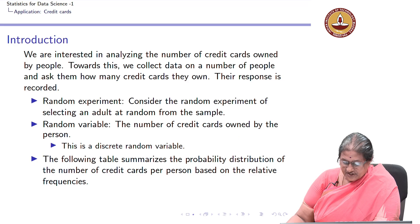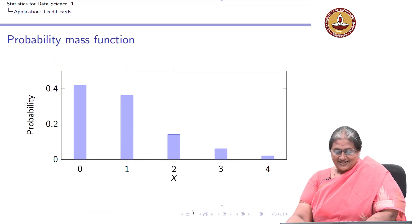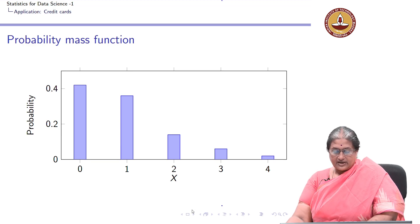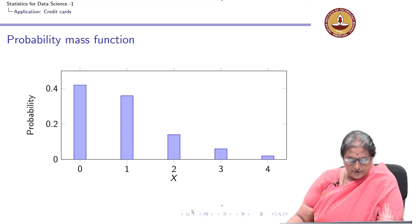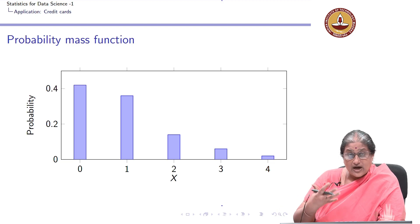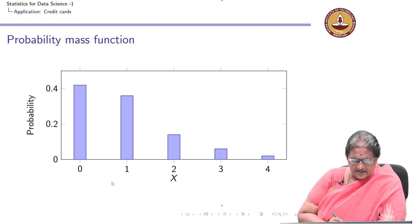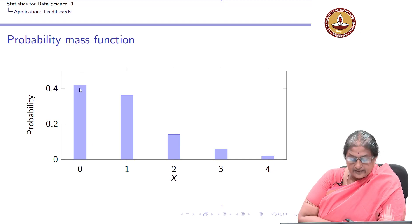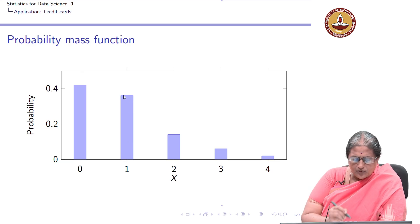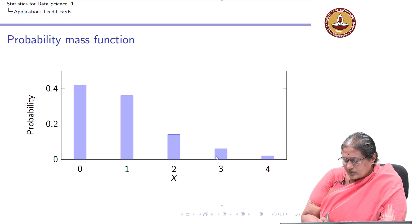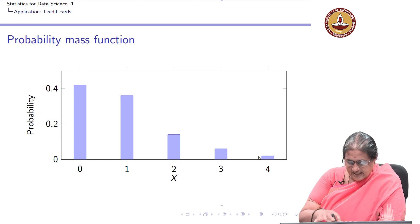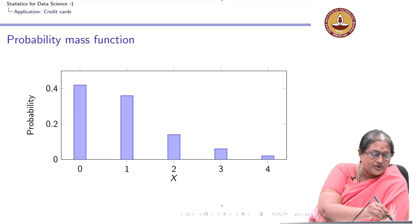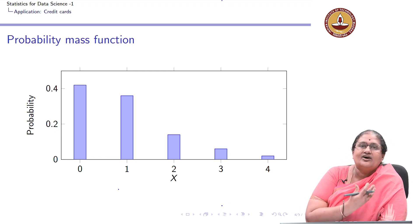Now let us plot the probability mass function. The graph of the PMF gives us the distribution of the random variable. From the graph we can see that 0 has a peak, meaning most people do not own any credit card. Many people own one credit card, whereas very few people own 3 or 4 credit cards. This table and plot give us a clear idea of the distribution.